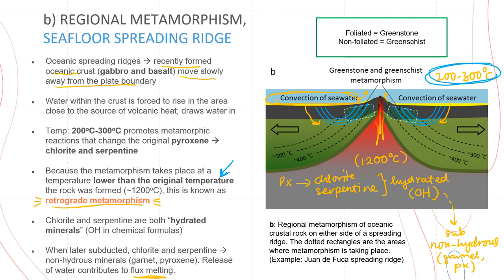The cycle then begins all over again. In this region you would typically expect to find rocks such as greenstone, if it's not foliated, and greenschist, if it is foliated.